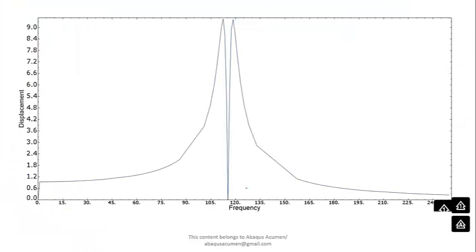So this is our resonant frequency — somewhere near 115 Hz. When the frequency ratio omega/omega-n tends toward 0, the displacement is around 0.09 mm. At the resonance condition it is 9 mm — that is 10 times higher. When the loading frequency and natural frequency match, you get this resonance peak. The sudden drop afterward, where the sign changes, is the anti-resonance condition.